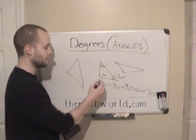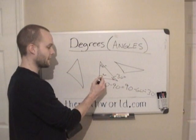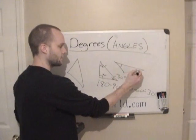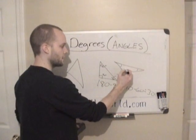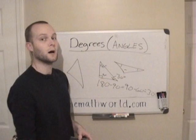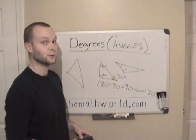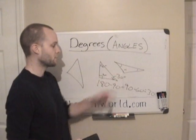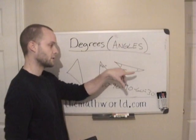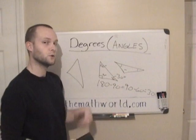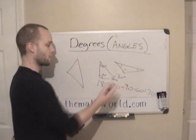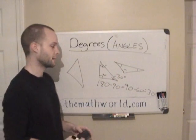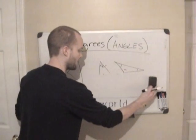It's very important to know that even if it's not a right triangle, all the angles in a triangle will add up to 180 degrees. So if you're given two of them and need to find the other one, all you have to do is subtract those two degrees from 180 and that will give you your answer.